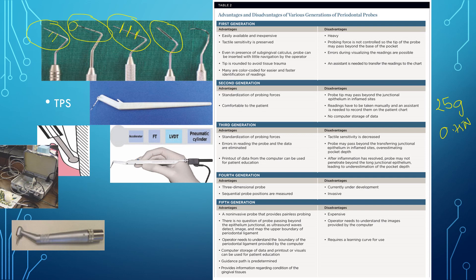Now this flattened head is the Goldman Fox probe. It is same as Williams probe but it is having a flat head. Why is this flattened? Because it provides an ease to go into the labial as well as lingual surfaces. Now this is probably you all know the Nabers probe, which is specially used to diagnose the furcation involvement and the access to the furcation to know the extent of the furcation.